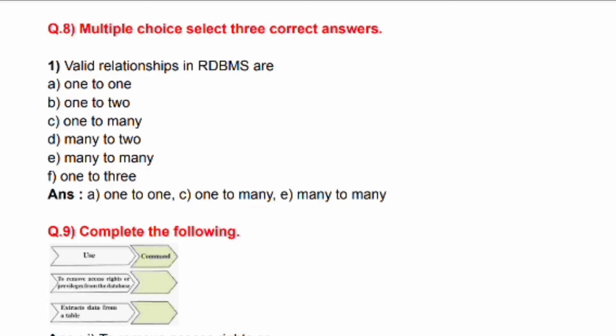Question No. 8: Multiple choice - select three correct answers. Valid relationships in DBMS are: Answer: A. One to one, C. One to many, E. Many to many.